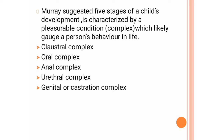Murray suggests five stages of child development, each characterized by a pleasurable condition complex that guides a person's behavior in life. First, the claustral complex — comparisons of the secure, serene, and dependent existence of the fetus within the womb. Second, the oral complex — the sensuous enjoyment of sucking and nourishment through the mother's breast. Third, the anal stage — pleasure resulting from children becoming aware of toilet-related activity. Fourth, the urethral complex — pleasure associated with urination. Last, the genital or castration complex — accompanied by genital pressures.